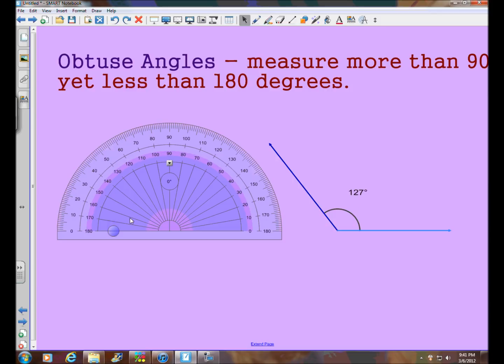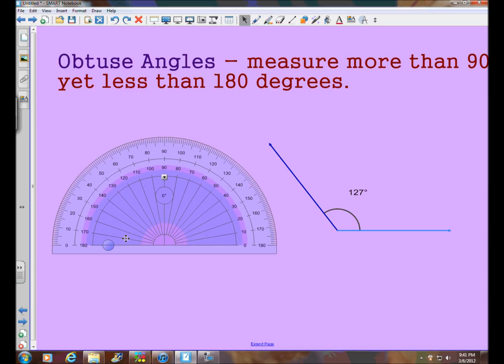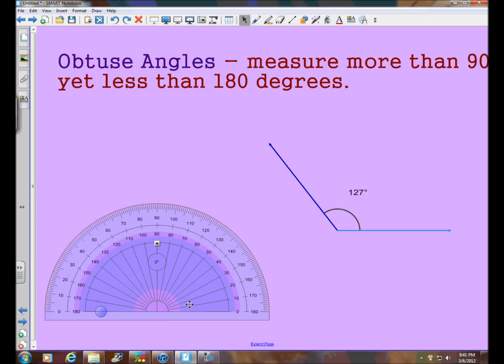Let's make another obtuse angle. Let's slide this down. Alright, so let's see. We'll start from scratch again. We've got our baseline. Here's the vertex. And it extends through zero this way. So we'll extend it out.